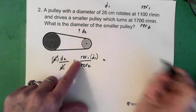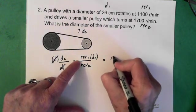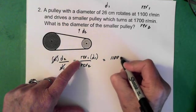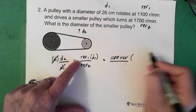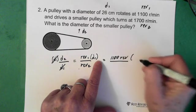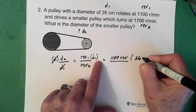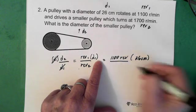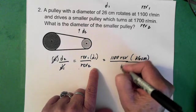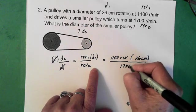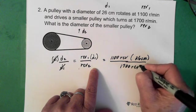Now revolution 1. 1100 revolutions. Times diameter 1. Which is 26 centimeters. Divided by revolution 2. Which is 1700 revolutions.